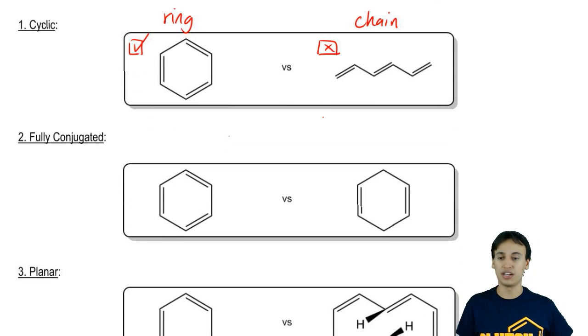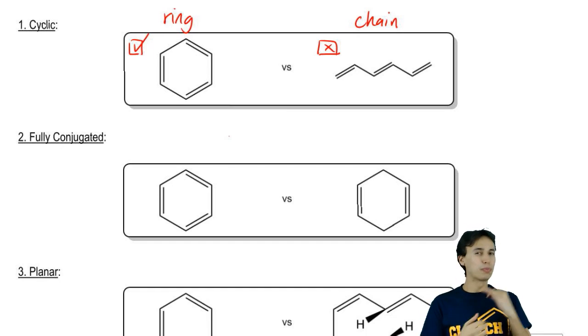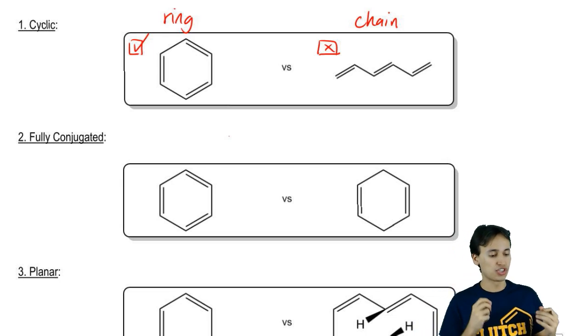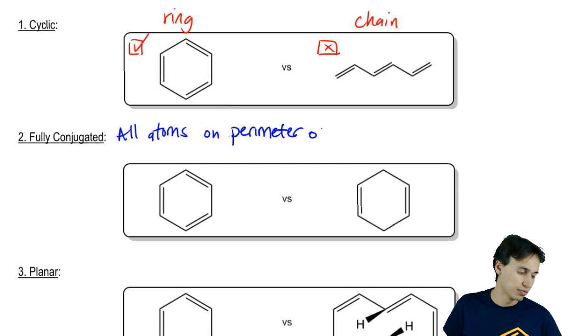The second one is fully conjugated. This idea of fully conjugated actually comes from prior lessons. Our clutch videos cover the concepts of conjugation, so if you want to brush up on this idea, feel free to go into your search bar and type conjugation. So fully conjugated all it means is that all atoms on the perimeter of the ring must resonate.